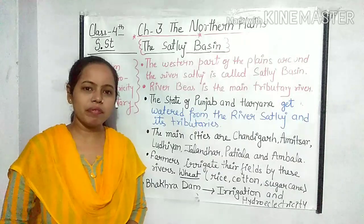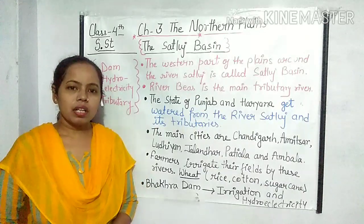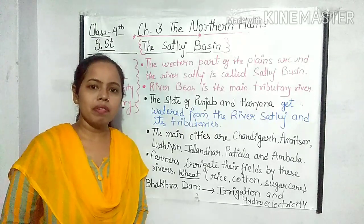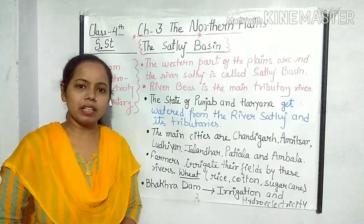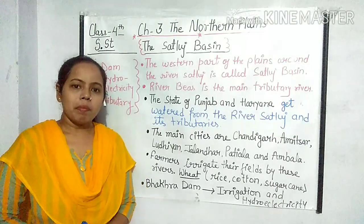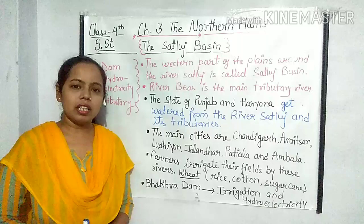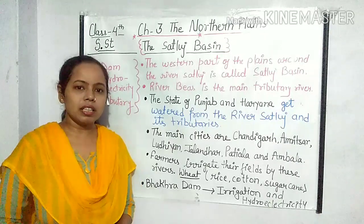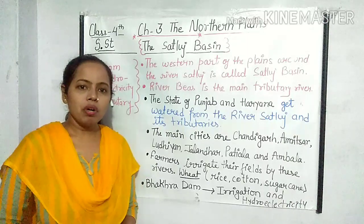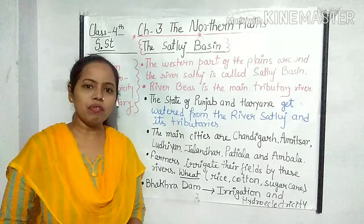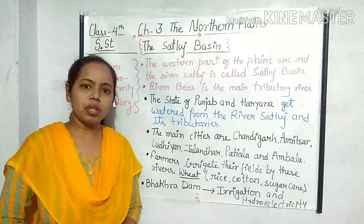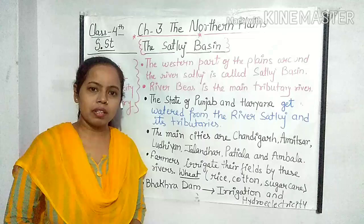Plains are very fertile because the river carries silt, mud and sand with itself when it flows and deposits it on the banks. Jab nadi apne saath silt, sand bahakar laati hai, toh woh use apni kinaron par ikattha karti hai. Isliye nadiyon ka kinara bahut hi fertile hota hai, aur wahan ka mukhy occupation farming ya agriculture hota hai. Satluj Basin ke logon ka bhi mukhy occupation farming hai.